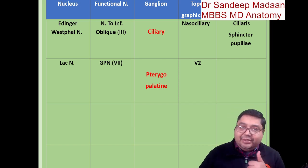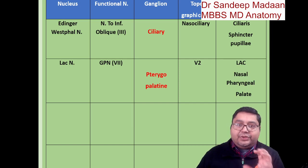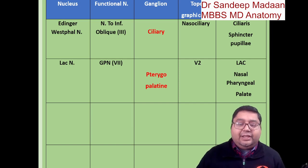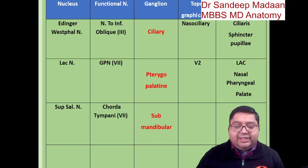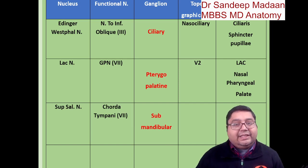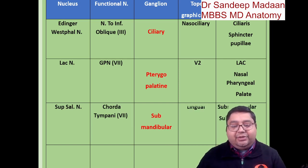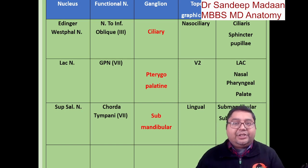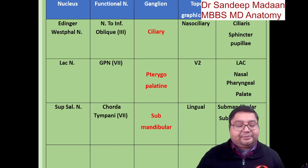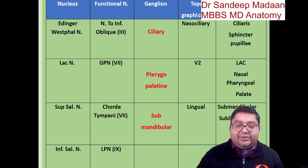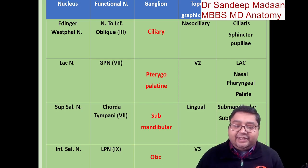The most important target for the lacrimal pathway is the lacrimal gland, along with the nasal, pharyngeal, and palate regions. Then the superior salivary nucleus sends fibers along the chorda tympani, which relays in the submandibular ganglion — the lingual nerve is topographical — and the target tissue is the submandibular and sublingual glands. Finally, the inferior salivary nucleus sends fibers via the lesser petrosal nerve to the otic ganglion, held by the mandibular nerve, and the target gland is the parotid.